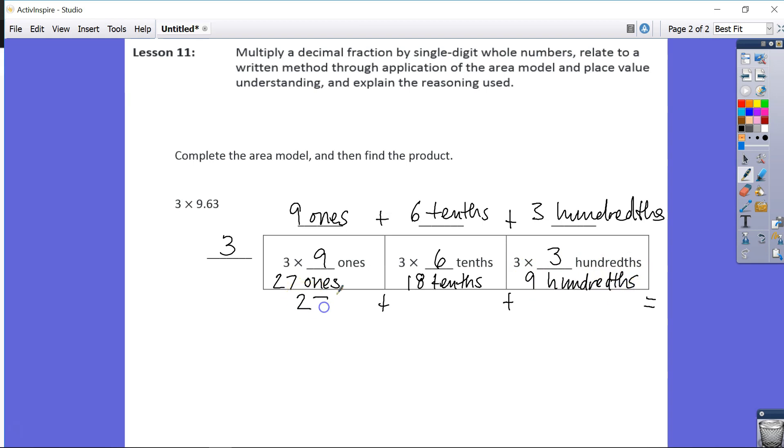27 ones is just going to be 27. 18 tenths is not 18 in the tenths place. Your 8 has to be in the tenths place, which is going to be the same as 1 and 8 tenths. Same thing, this 9 has to be in the hundredths place. So, we have 0 in our 1's place, 0 in our tenths place, and 9 in the hundredths place.